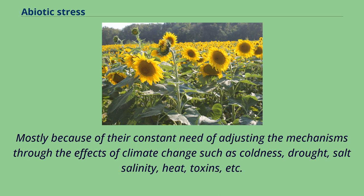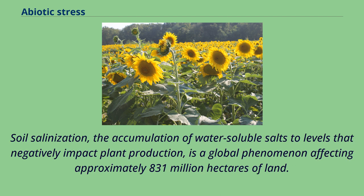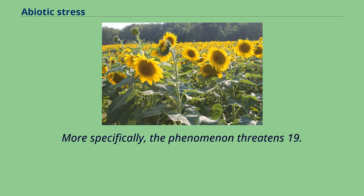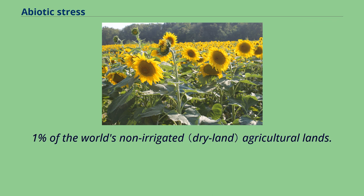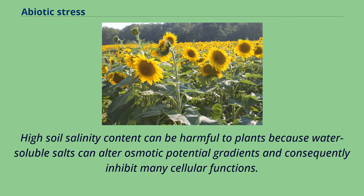Soil salinization — the accumulation of water-soluble salts to levels that negatively impact plant production — is a global phenomenon affecting approximately 831 million hectares of land. More specifically, the phenomenon threatens 19.5% of the world's irrigated agricultural land and 2.1% of the world's non-irrigated agricultural lands. High soil salinity content can be harmful to plants because water-soluble salts can alter osmotic potential gradients and consequently inhibit many cellular functions.